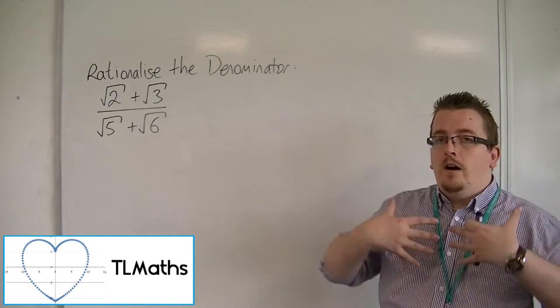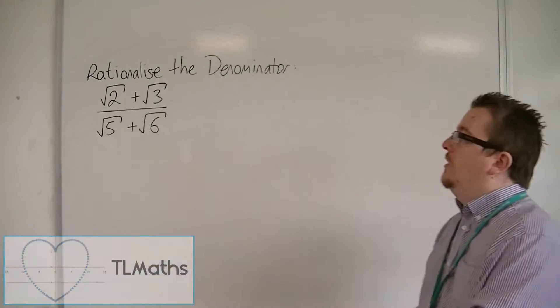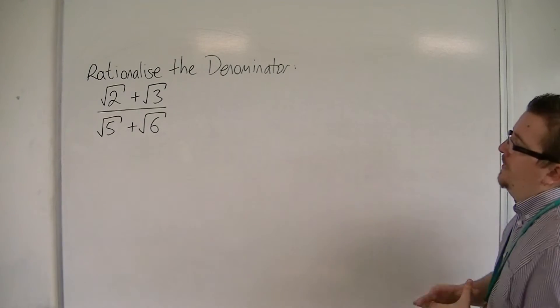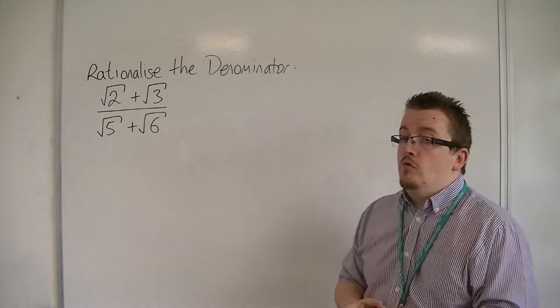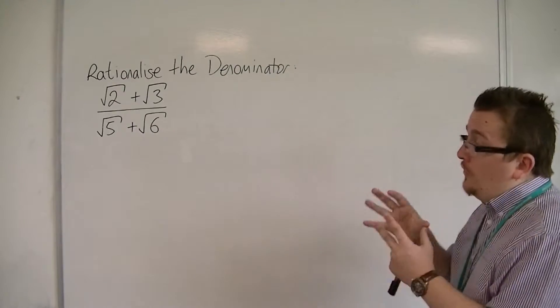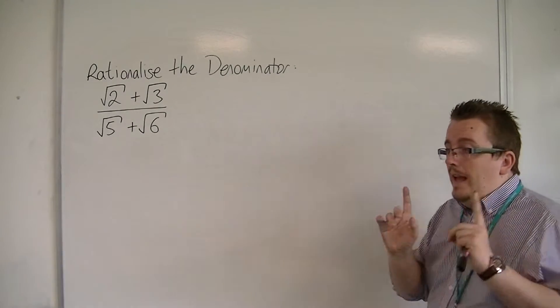In this video I want to look at a harder, more tricky example of rationalising the denominator for surds, where we've got root 2 plus root 3 over root 5 plus root 6. It looks absolutely ghastly. However,